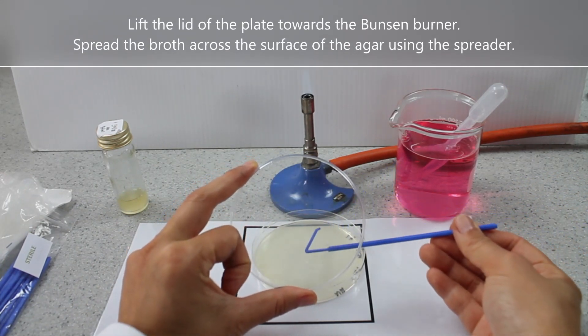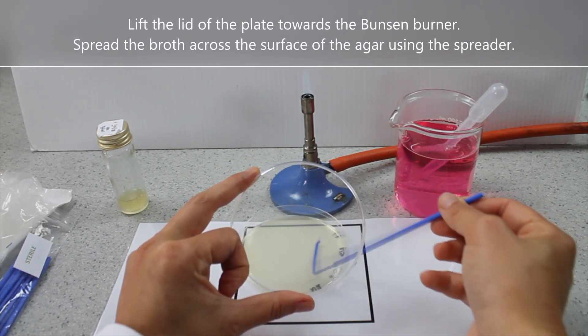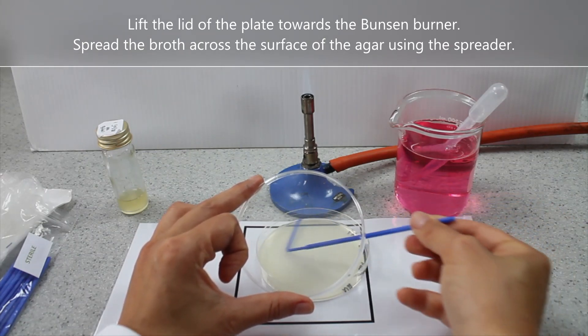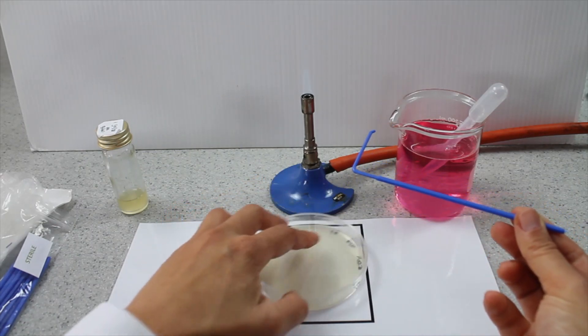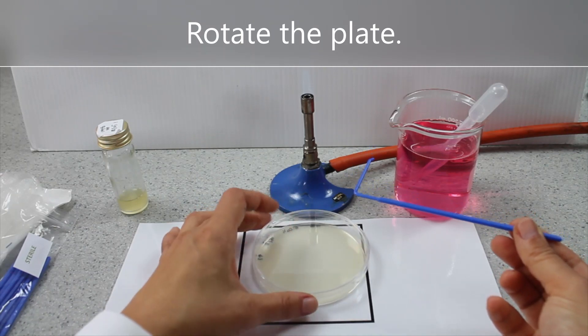Lift the lid of the plate towards the Bunsen burner. Spread the broth across the surface of the agar using the spreader. Rotate the plate.